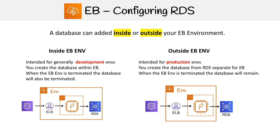On the other side, you have outside the Elastic Beanstalk environment. The way you know you're doing this is you're creating your database first in RDS, and then you configure it with the EC2 instances in your Elastic Beanstalk environment. When the Elastic Beanstalk environment is terminated, the database is going to remain because it wasn't created as part of the EB environment.